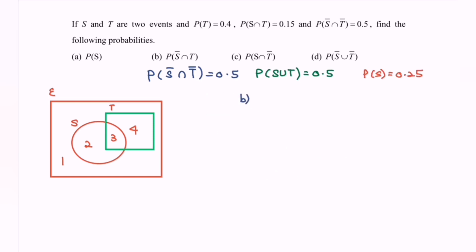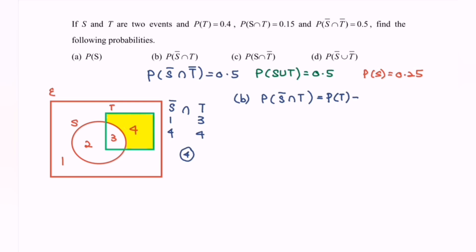For part B, we need P(S'∩T). From the diagram, S complement covers regions 1 and 4, and T covers regions 3 and 4. Their intersection is region 4. The formula is P(T) minus P(S∩T). Substituting: 0.4 − 0.15 = 0.25. Therefore, P(S'∩T) = 0.25.